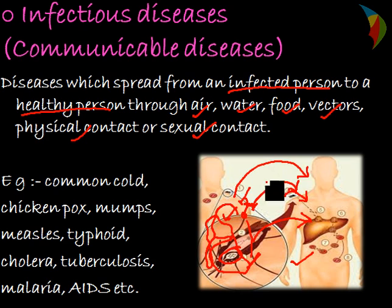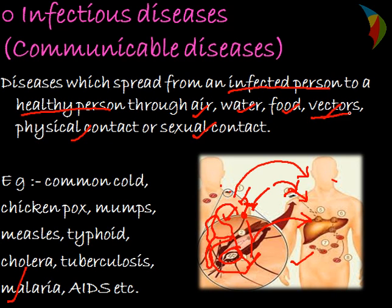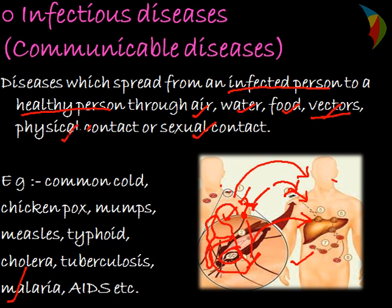This is how the disease is transmitted from an infected person to a healthy person. Malaria is an example of a communicable disease transmitted through a mosquito, which acts as a vector. In the next session we will continue with what are vectors.